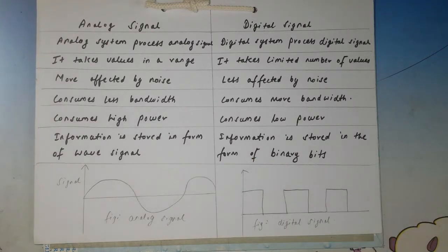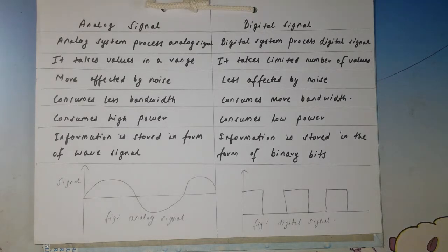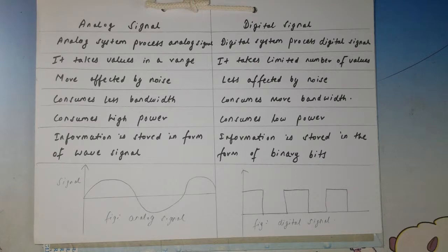Whatever we speak is an analog signal. In the past, when someone called on a telephone, your voice was in the form of a sound wave, converted to radio waves, transmitted, and then converted back to sound at the receiver end. Nowadays, we use digital signals for such processing — when you speak it is transmitted as digital signals, resulting in less disturbance and much easier transmission.